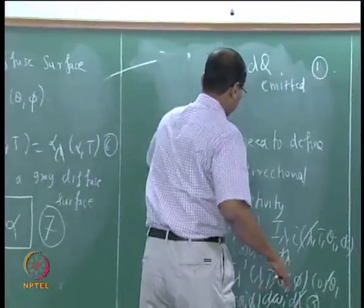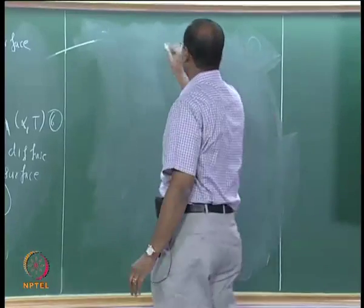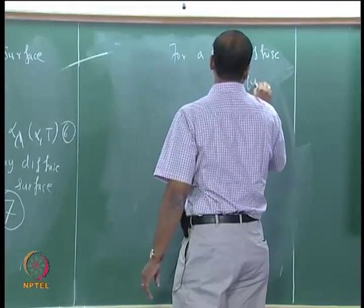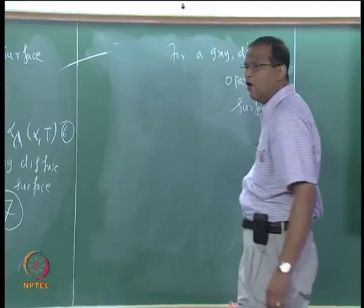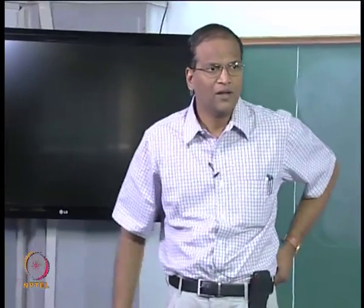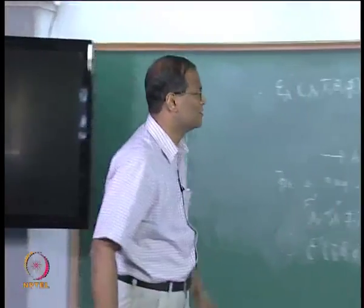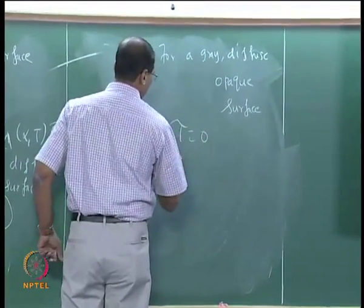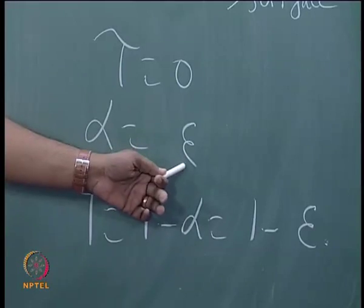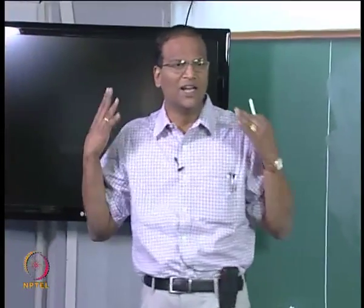For a grey diffuse opaque surface, this is a very common engineering assumption. If you want to find the radiative heat transfer between the walls of a classroom — opaque walls — making the grey diffuse assumption considerably simplifies the analysis since tau = 0. From handbooks or experiments giving you the emissivity of the surfaces, you can calculate absorptivity, then reflectivity, and proceed with detailed radiative heat transfer calculations.